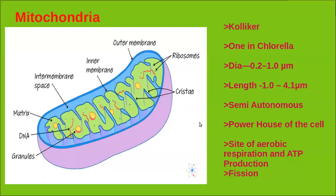Mitochondria are commonly considered the powerhouse of the cell because they are the site of aerobic respiration and ATP production. The process of cellular respiration occurs in the mitochondria, and they release energy in the form of ATP. That is why mitochondria are called the powerhouse of the cell.